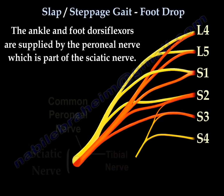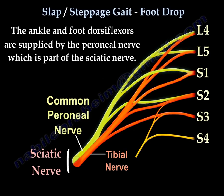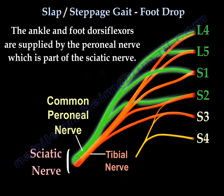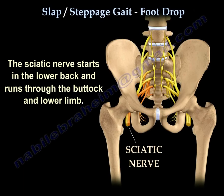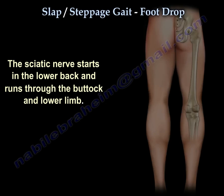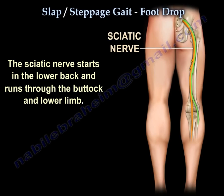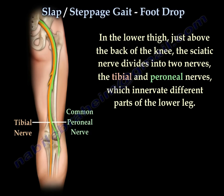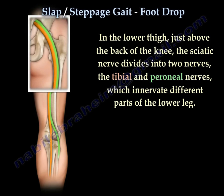The ankle and foot dorsiflexors are supplied by the peroneal nerve, which is part of the sciatic nerve. The sciatic nerve starts in the lower back and runs through the buttock and lower limb. In the lower thigh, just above the back of the knee, the sciatic nerve divides into two nerves: the tibial and peroneal nerves, which innervate different parts of the lower leg.